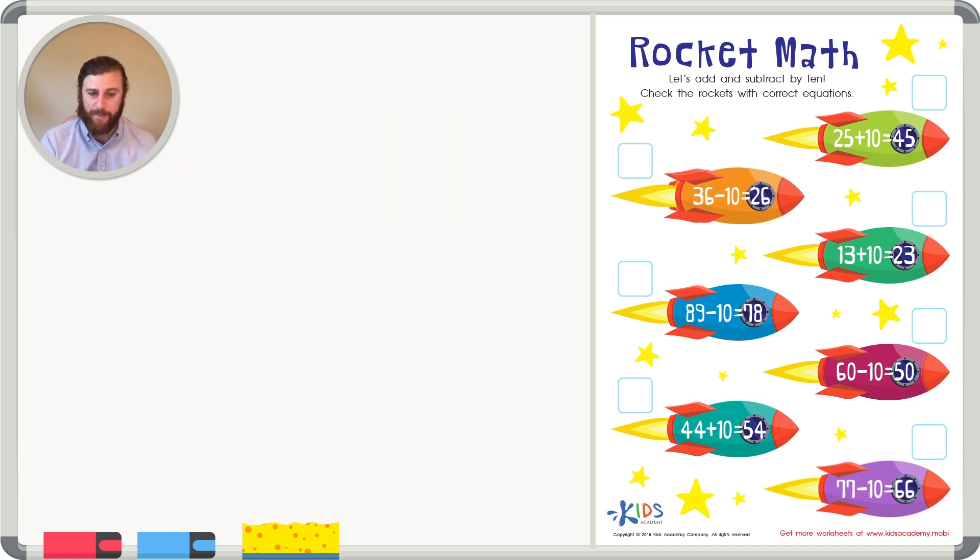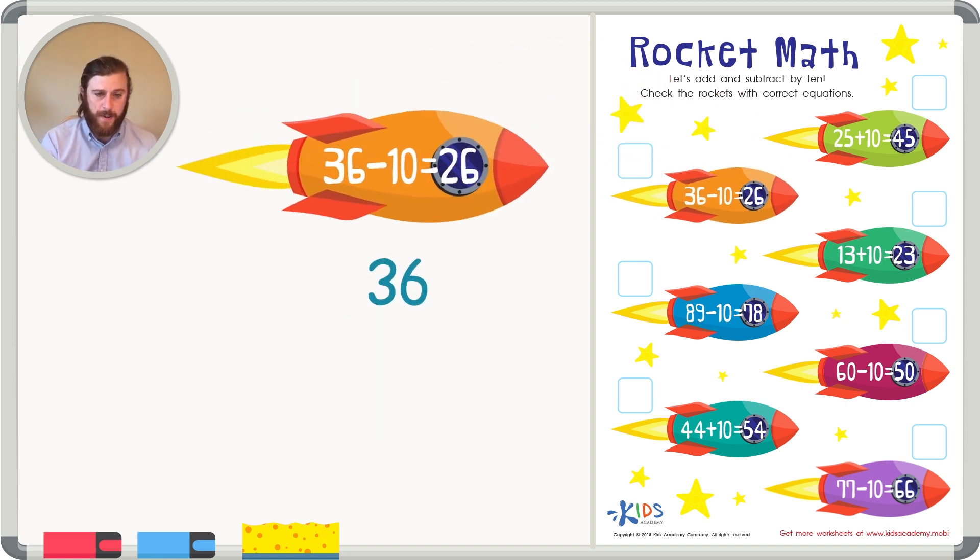Let's take a look at the second rocket. We have 36 minus 10, and it has a difference of 26. Well let's see if this is correct. Remember when you take 0 away from any number, your number doesn't change. 6 minus 0 is just 6.